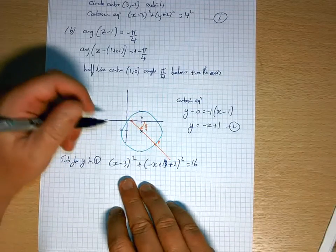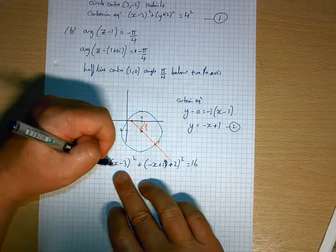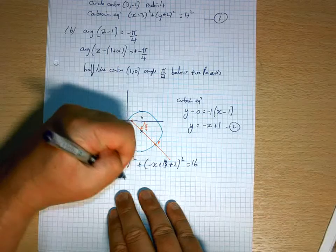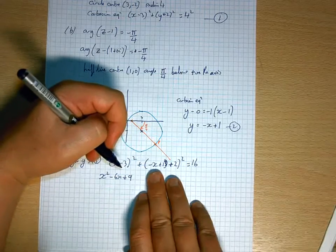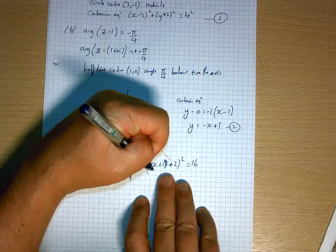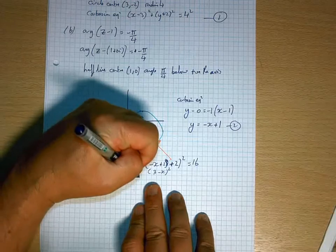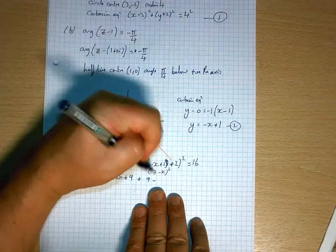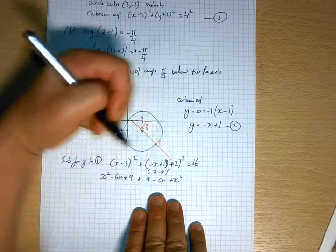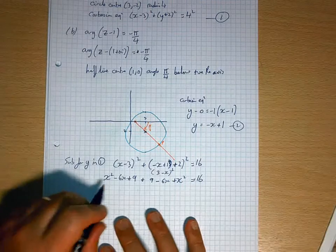x minus 3 squared plus minus x plus 1, plus 2 squared equals 16. Okay, so let's work out what we've got here now. Let's expand the brackets. So I'm going to have here x squared minus 6x plus 9, and this has become 3 minus x all squared.